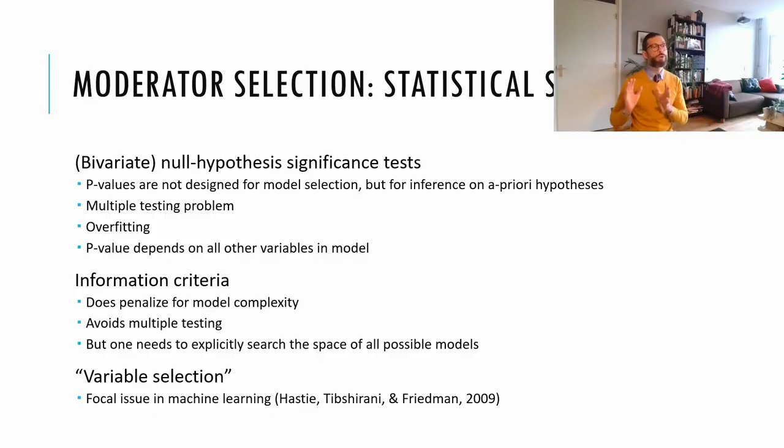But aside from theory, there are also statistical methods to select relevant moderators. One common practice is to use p-values from bivariate meta-regression, but one problem with this is that p-values are not designed for model selection, so we're using the wrong tool for the job. Another problem is that this approach rarely controls for multiple testing. Yet another limitation is that this is no formal solution to the problem of overfitting. And finally, the effect of each moderator depends on all of the other predictors in the model, but by using only bivariate tests, we ignore that completely.